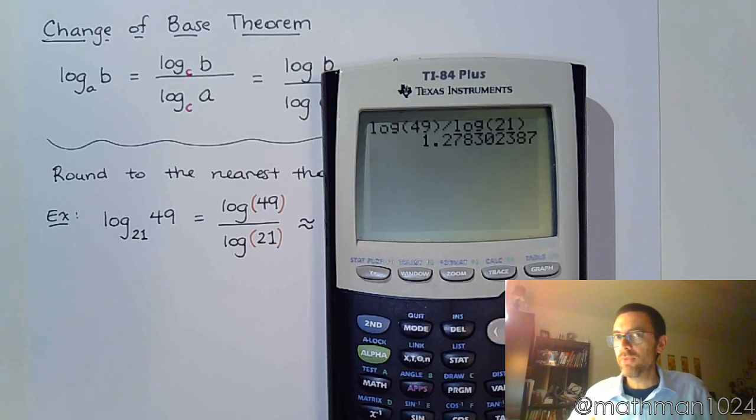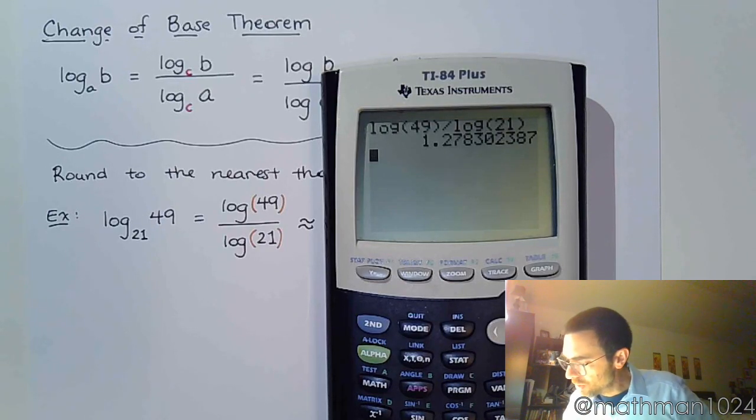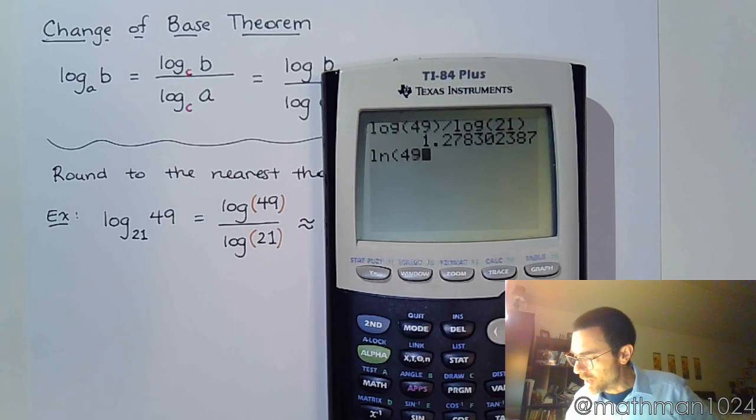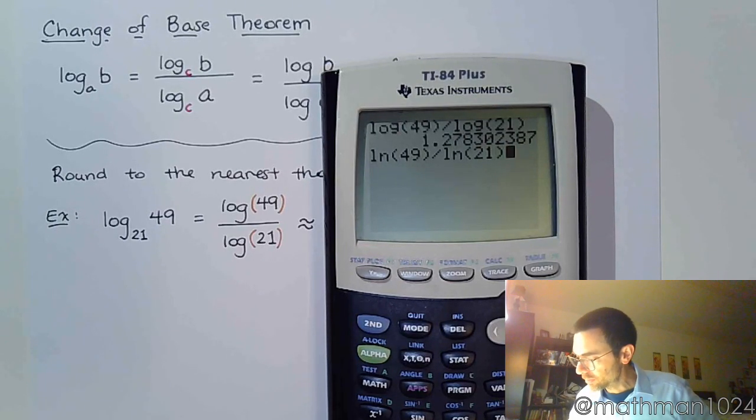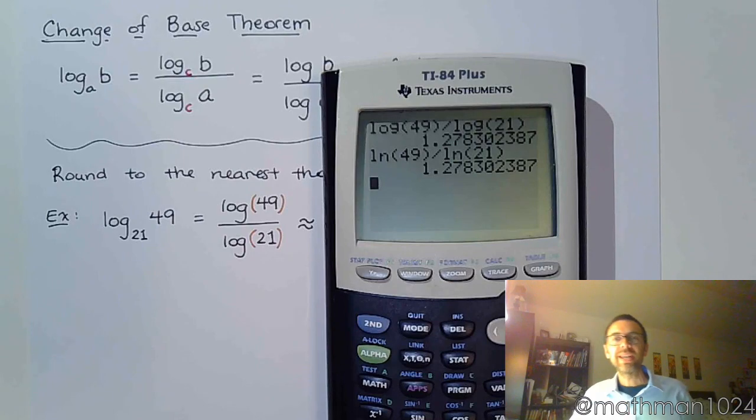Now, I said it didn't matter if you used common log or natural log, so let's make sure that I'm not a liar. If I do the natural log of 49, close parentheses, divided by natural log of 21, you see that I get the exact same value. It doesn't matter which way I do it.